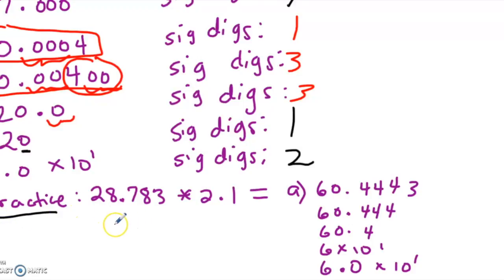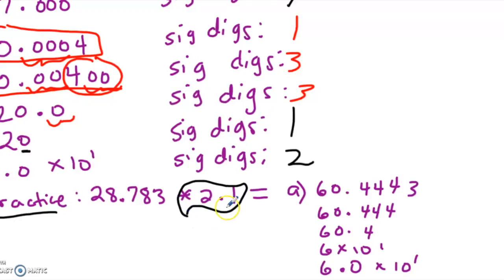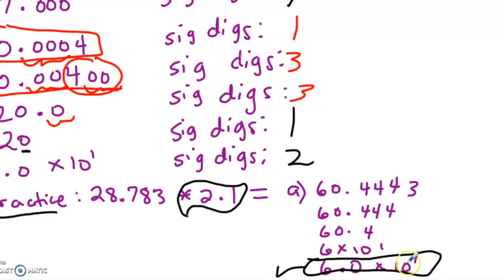Now let's combine the multiplication rules with our understanding of significant figures to compute 28.783 times 2.1 using the correct number of significant digits. The number 2.1 has the least number of significant digits — just 2 — so your answer must have 2 sig figs. The only answer with two sig figs is 6.0 × 10¹, so that is the correct answer.